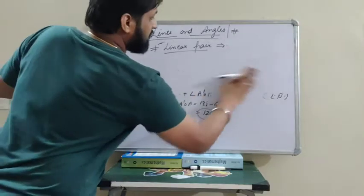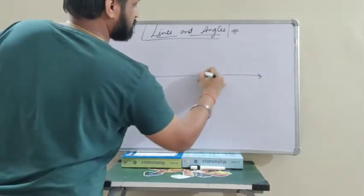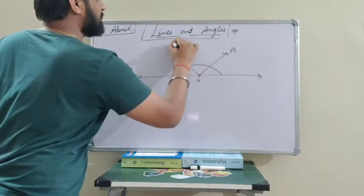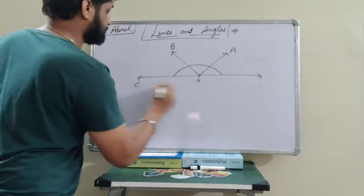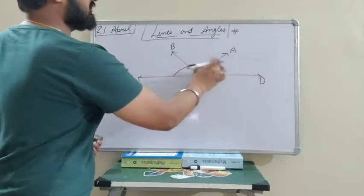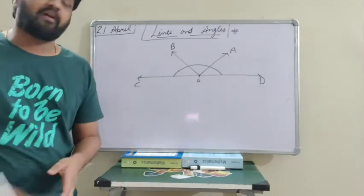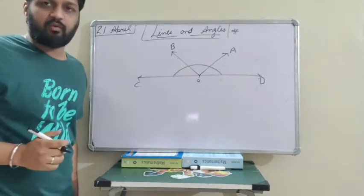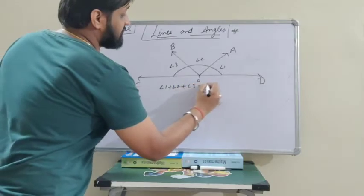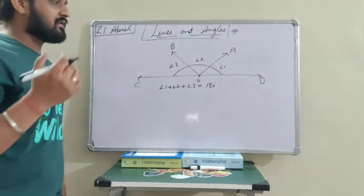Let's see one more concept. Here we have line CD with point O on it, and two rays OA and OB. These two rays divide the whole angle into three parts — angle 1, angle 2, and angle 3. So angle 1 plus angle 2 plus angle 3 equals 180 degrees, because the sum of all angles on a straight line is always 180 degrees. The reason is linear pair, but when more than two angles are there, it is better to write the reason as the sum of all angles on a straight line is 180 degrees.